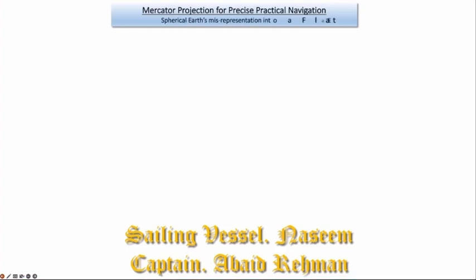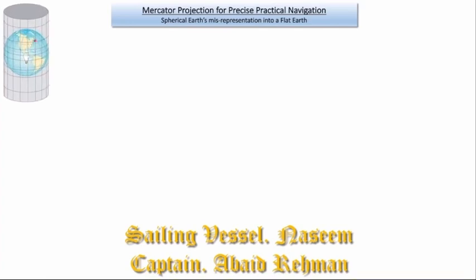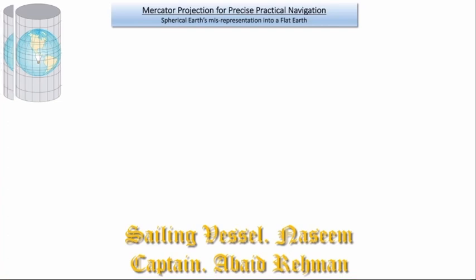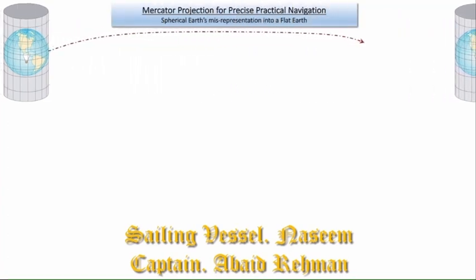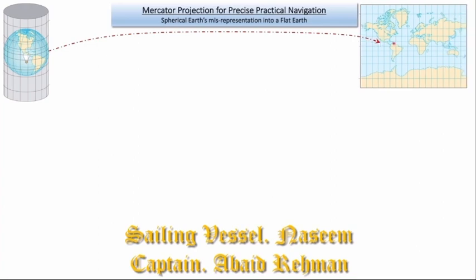Even though it is a spherical Earth's misrepresentation into a flat Earth, it is still very useful for precise and practical navigation. Imagine that the Earth is wrapped around a cylinder, which is only touching it at the equator, and there is a bulb right at the heart of the center of the Earth, casting the shadows of land masses on the cylinder. When we unwrap the cylinder on a flat surface, we get a map of a Mercator Projection.